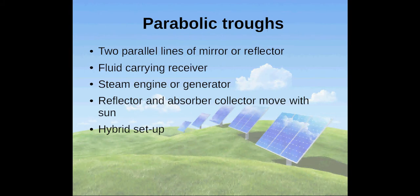Parabolic troughs consist of two parallel lines of mirror or reflector curved in a single direction to focus the sun's energy to a fluid-carrying receiver placed in the heart of the curved trough mirror. The sun's energy heats the fluid inside the tube, and generated heat energy is used to generate electricity using a steam engine or generator.